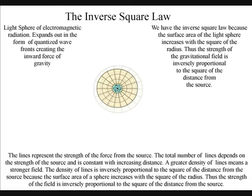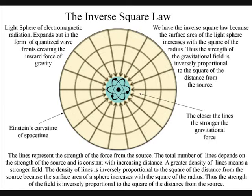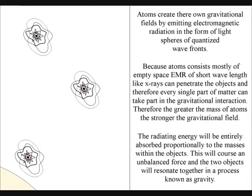Note how this process works in the three dimensions of our everyday life, unlike the diagrams of gravity in the form of a trampoline that are just two-dimensional. We have the inverse square law because the surface area of the light sphere increases with the square of the radius, thus the strength of the gravitational field is inversely proportional to the square of the distance from the source.